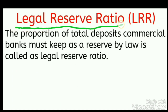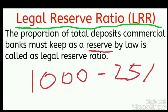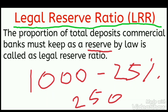The last term is legal reserve ratio (LRR) — the proportion of total deposits that commercial banks must keep as reserves by law. For example, if the bank receives total deposits of rupees 1000 and the LRR is 25%, the bank must keep rupees 250 as reserve and the remaining rupees 750 can be given as loans to others. This 25% is the legal reserve ratio.